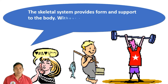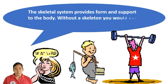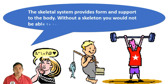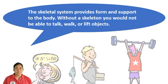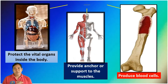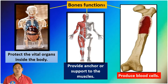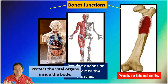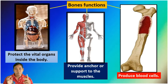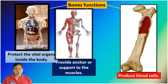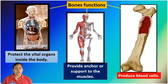Without the skeleton, you would not be able to talk, walk, or lift objects. The skeletal system includes the bones, joints, cartilage, ligaments, and muscles.